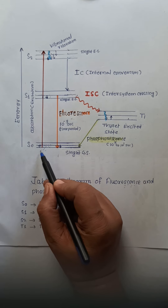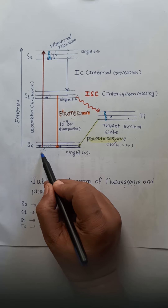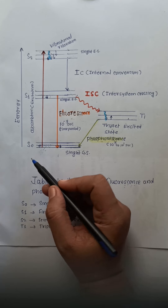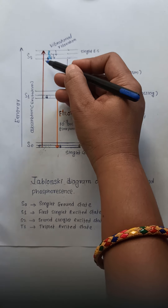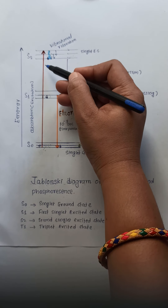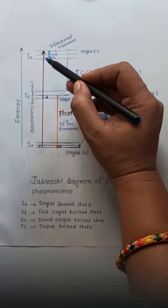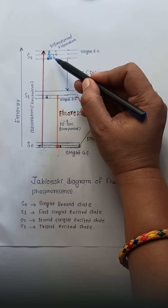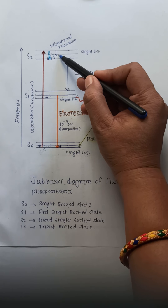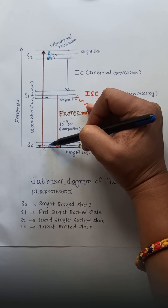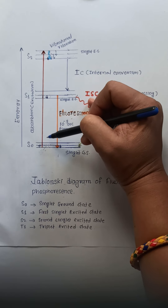When a molecule absorbs a photon, the electrons of the molecule get excited from the ground state to the excited state — this is called absorption. In the excited state the electrons are very unstable, and hence they try to get back to the ground state, which is called relaxation.